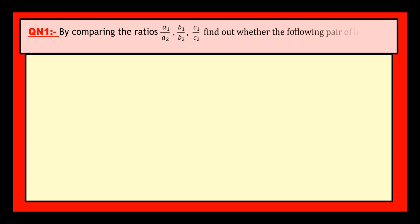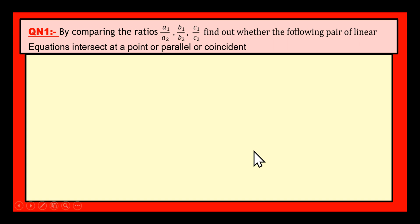Dear students, this is question number 1. By comparing the ratios A1 by A2, B1 by B2, and C1 by C2, find out whether the following pair of linear equations intersect at a point, or are parallel, or coincident.